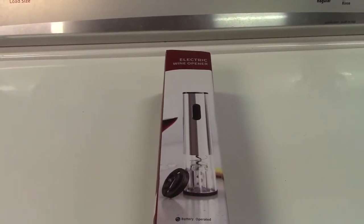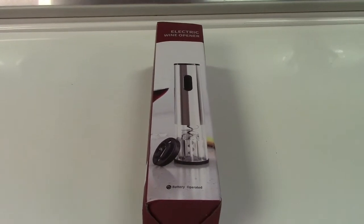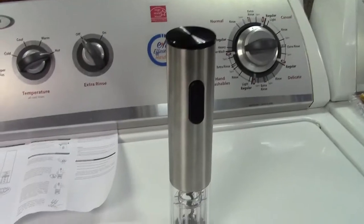This is the Senzer electric wine bottle opener. Let's take it out of the box. In the box you get the instruction manual and the unit itself.